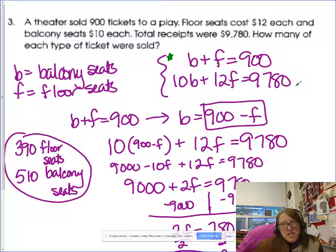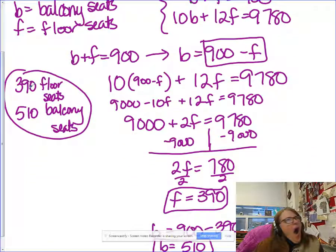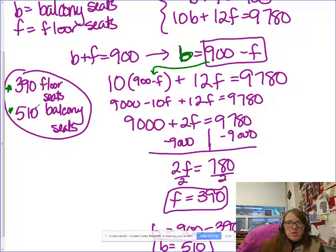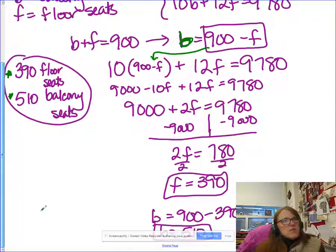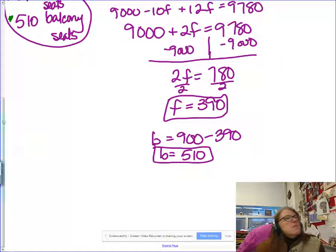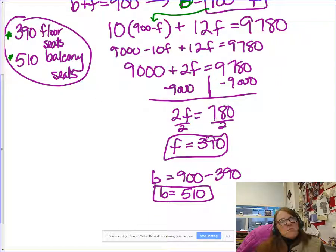Pause this anytime you need to. Here we go. I took that first equation and I solved for the balcony tickets right here. You could certainly do it the other way. Then I substituted those in the price one and ended up with 390 floor seats, 510 balcony seats. Because when you plug those in each equation, they work. I'll scoot down here a little bit if you need to see more of this work on how the substitution went.